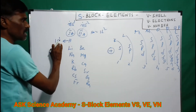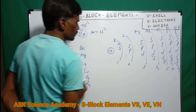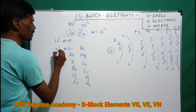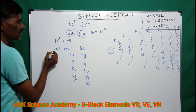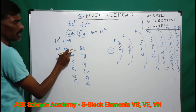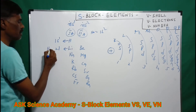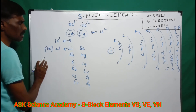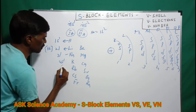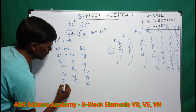Hydrogen is 1s1, meaning it is in the first shell. Lithium's general configuration is 2s1, meaning it is in the second shell. The series continues: 3s1, 4s1, 5s1, 6s1, 7s1 for the subsequent periods.